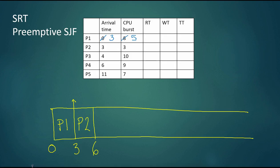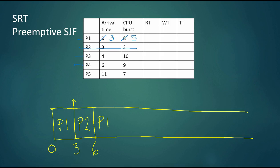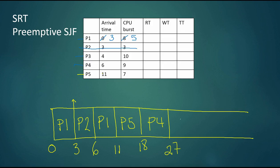At time six, P2 is done. In the ready queue we have P1 with five units left, P3 with ten, and P4 with nine. Without any shorter process arriving to preempt, it proceeds as shortest job first: P1 goes until time 11. At time 11, P5 has also arrived and has the shortest CPU burst, so the order finishes as P5, then P4, then P3.